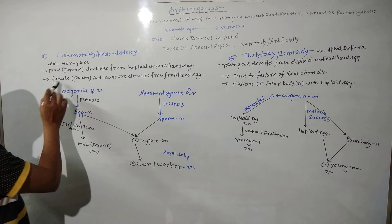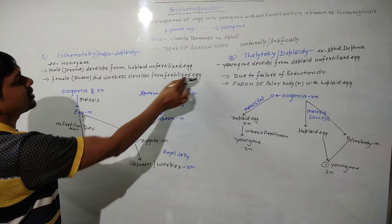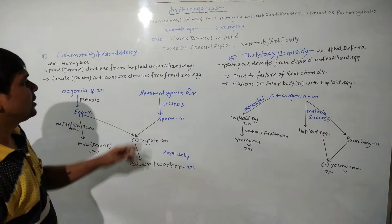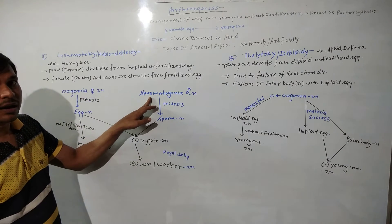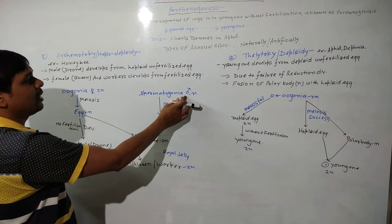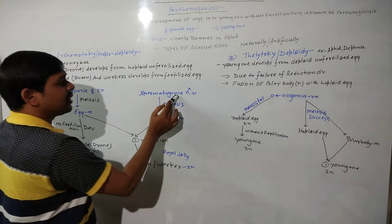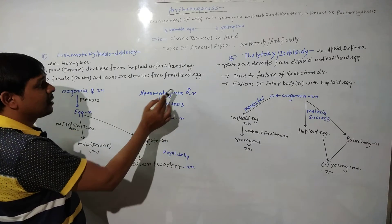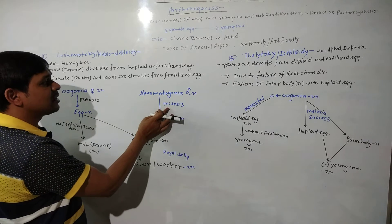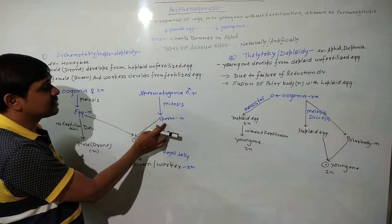In the second case, the Female — that is the Queen and Workers — develops from a fertilized egg. This is the normal process. Spermitogonia means the sperm mother cell, from the male, and it is already haploid. If any cell is already haploid, it always undergoes the process of mitosis to produce the haploid gamete, that is the sperm.